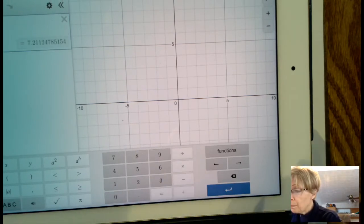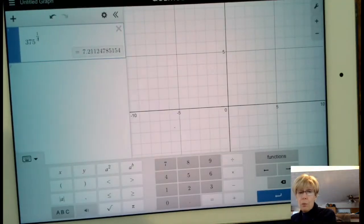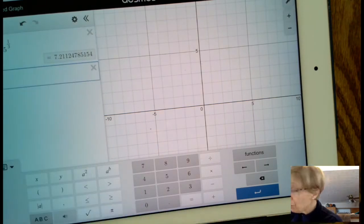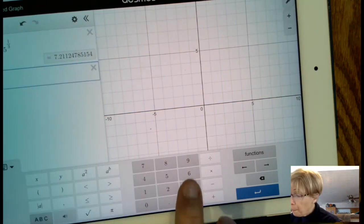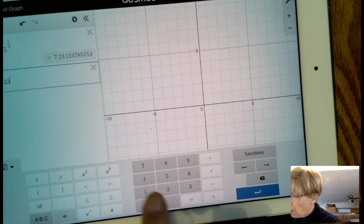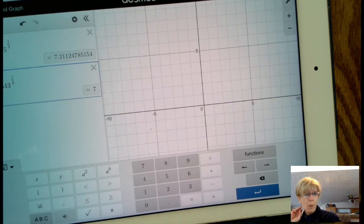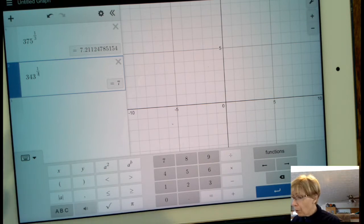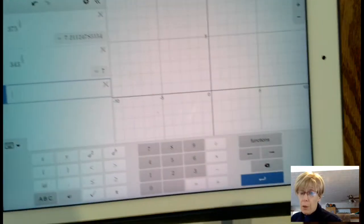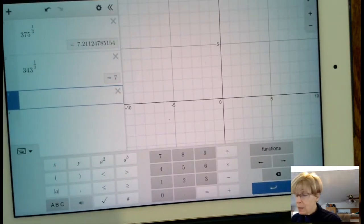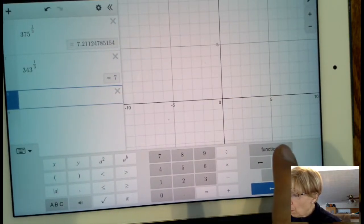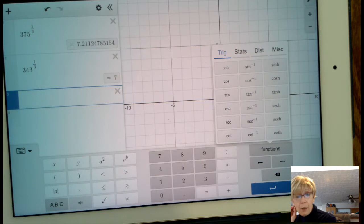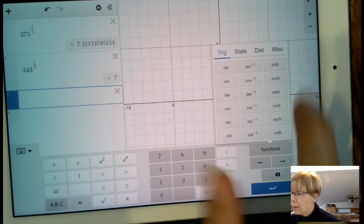That's where I wanted you to be able to see the functions button. If we go to functions and then miscellaneous, there's this button right here, the nth root of. The nth root of, we can type in the 3 and then arrow, and then we can type the 375. Notice we get the same answer. We can do functions and that button again. We can do the 3 and 343, and we get the 7.